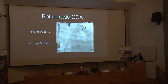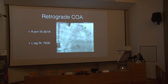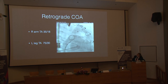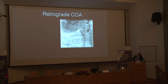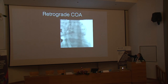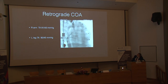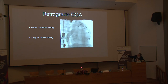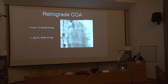In another patient with retrograde coarctation, the right radial arterial pressure was 25/18 mmHg while the descending aorta pressure was 75/30 mmHg — a clear gradient. We placed a stent in the coarcted segment and also placed an atrial septal stent. Following intervention, right arm pressure rose to the 80s and leg pressure to the 90s — still a small gradient but significantly improved.